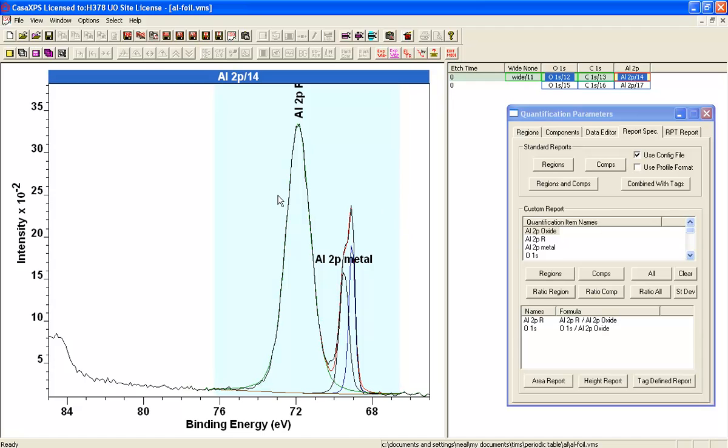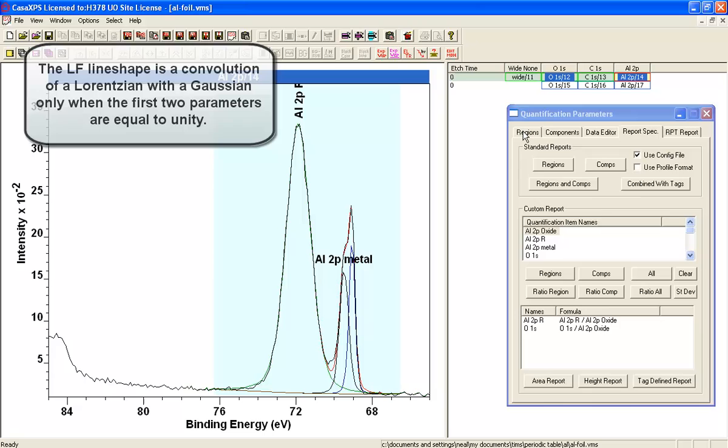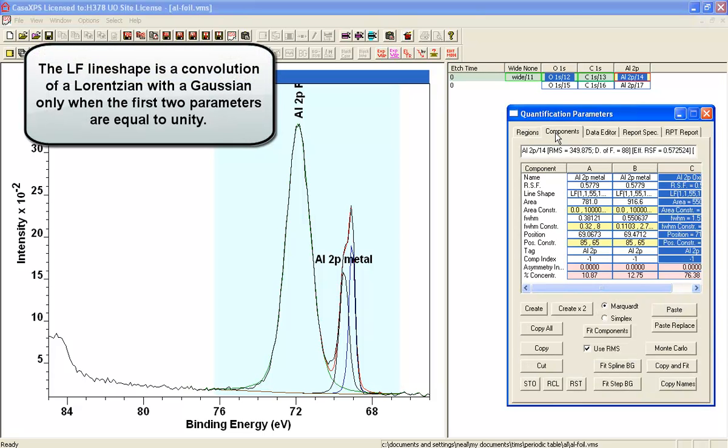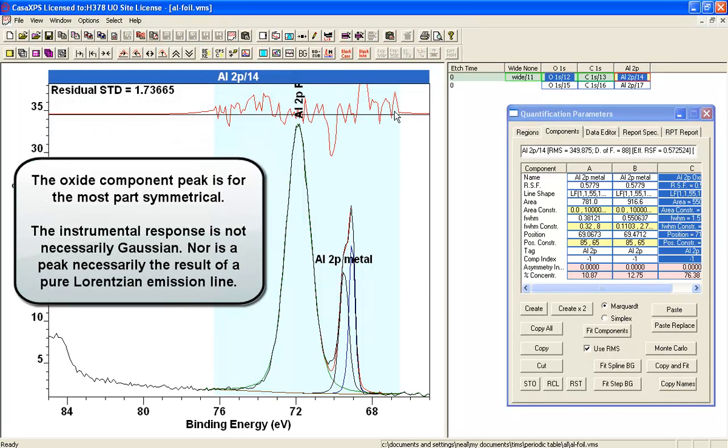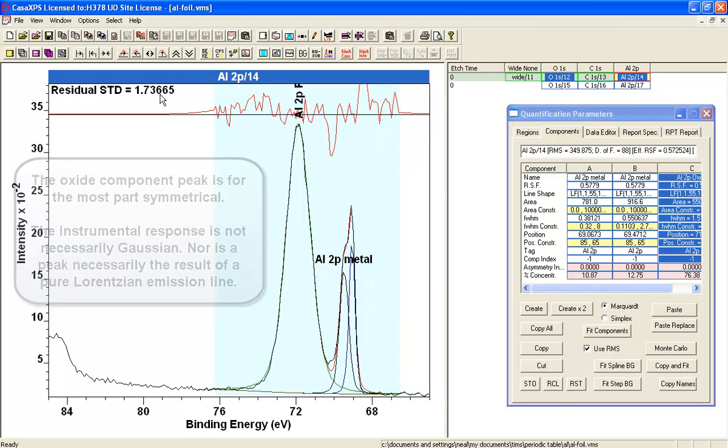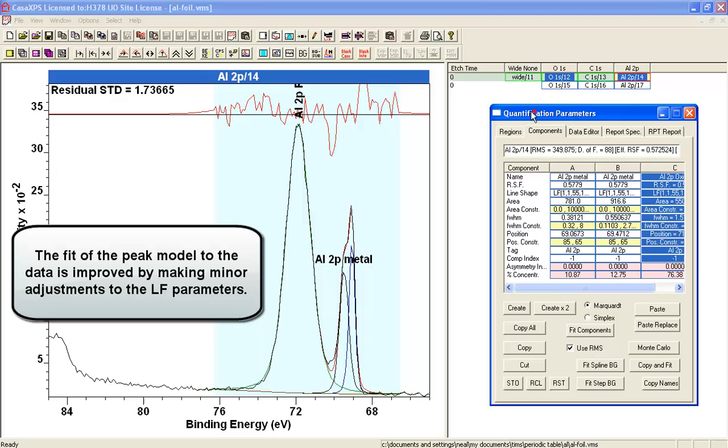So although this peak model looks reasonably good, what we have to do now is refine it to make sure that the signal that we're getting is appropriate. You see the fit can be estimated how good it is from the residual, and the residual standard deviation is 2.17. We'd expect it to be about unity, so we need to refine this a little bit.